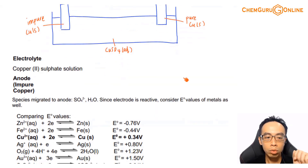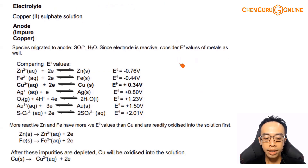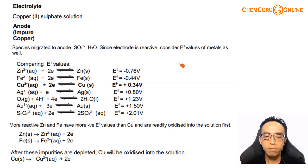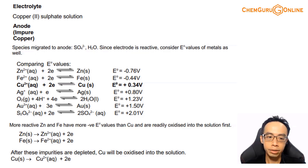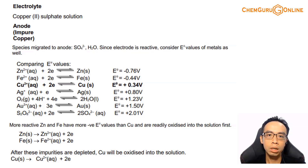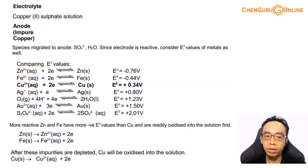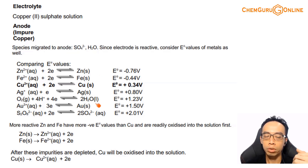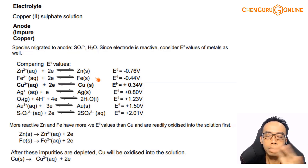How do we decide which species is discharged at the anode? The rule is simple: the one with the most negative E° value will be oxidised. Think of it like a race — regardless of how many participants there are, the fastest person wins. Whether 2, 5, 100, or 1,000 participants are running, the rule is the same. Similarly, no matter how many species want to be oxidised, the one with the most negative E° value will be oxidised first.